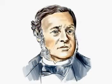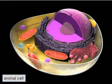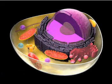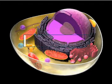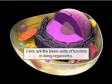In the following year, the German physician Theodor Schwann, who lived from 1810 to 1882, stated that animal organisms are composed of cells. Thus, these two German scholars, almost simultaneously, formulated two basic principles of the cell theory: first, that all living creatures are composed of one or more cells; and second, that cells are the basic units of function in living organisms.